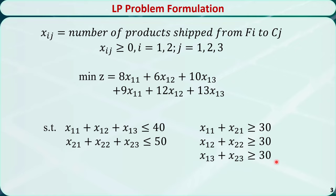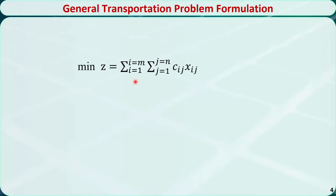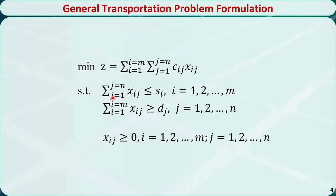This is the complete linear programming problem formulation. This is a more general form of the transportation problem formulation. The objective function is the sum of the cost matrix times the decision variables. The sum of each row is less than or equal to the supply capacity, and the sum of each column is greater than or equal to the required demand.